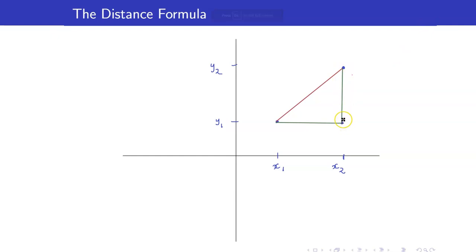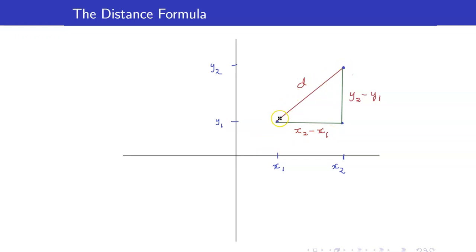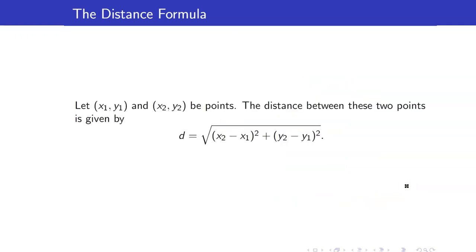What is the length of this line segment? Take note that this is just the distance between y1 and y2, so this is y2 minus y1. And this length here is just the distance between x2 and x1, so that's x2 minus x1. Using the Pythagorean theorem, if this length here is d, we have d squared equals the square of (x2 minus x1) plus the square of (y2 minus y1). So if we take the square root, we get the distance formula.